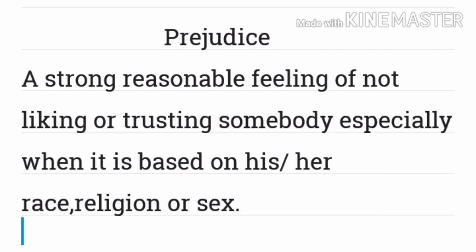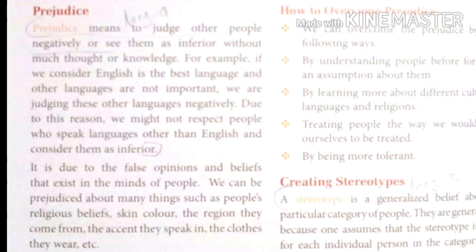Take one example of prejudice. If we consider English as the best language — some people give importance only to English because they think that English is the best language and other languages are not important. We are judging these other languages negatively. Because in our country like India, different states have different languages, so if we think that English is the only superior or best language, it means that we are judging other languages negatively. Due to this reason, we might not respect people who do not speak in English and consider them as inferior. It is a negative attitude — it is a prejudice — and it is not fair.